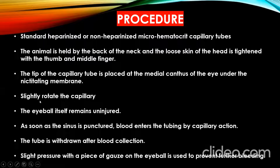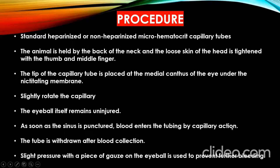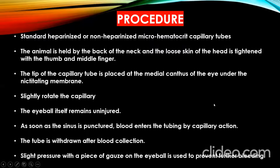The capillary is slightly rotated. Care must be taken that the eyeball itself remains uninjured. As soon as the sinus is punctured, the blood enters the tubing by capillary action and the blood can be collected. The tube is withdrawn after sufficient amount of blood is collected. Then slight pressure with a piece of gauze on the eyeball is used to prevent further bleeding from the eye.